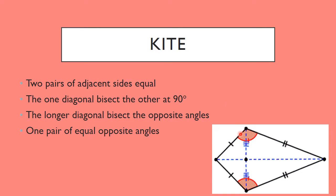Let's have a look at the kite. The kite has two pairs of adjacent sides that are equal — the shorter sides are equal to each other, and the two longer sides are also equal to each other. The one diagonal bisects the other at 90 degrees, so as shown by the blue dotted lines, where they cross, those angles are each equal to 90 degrees — all four of them.